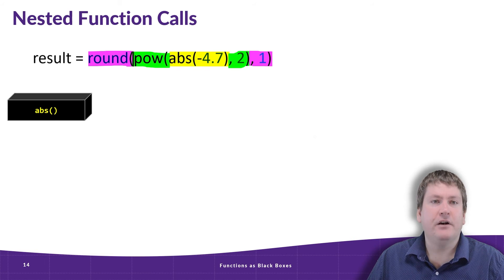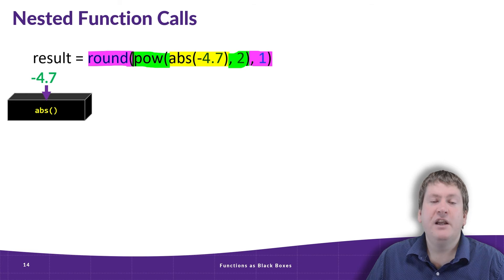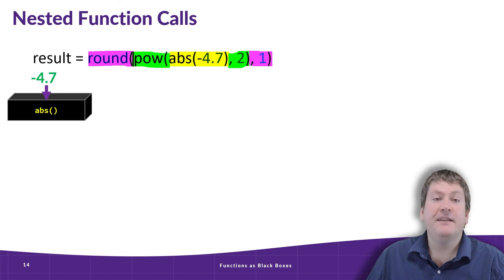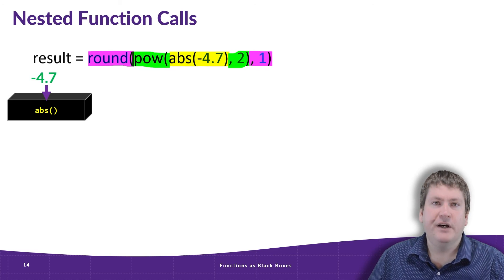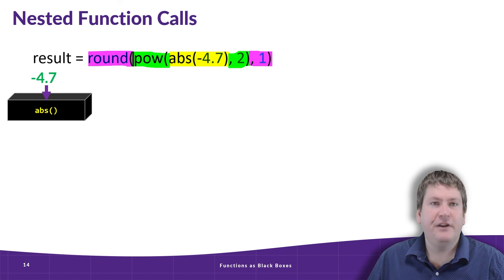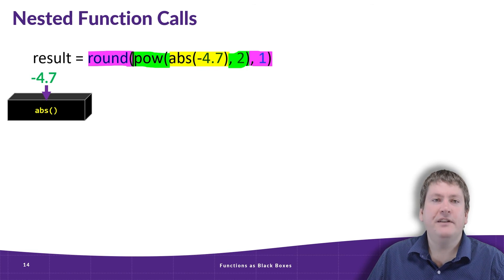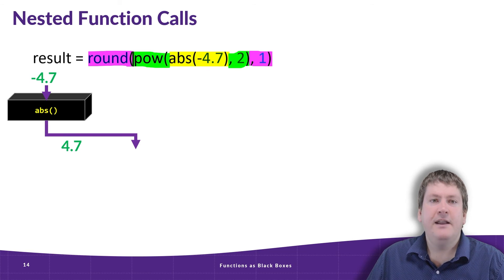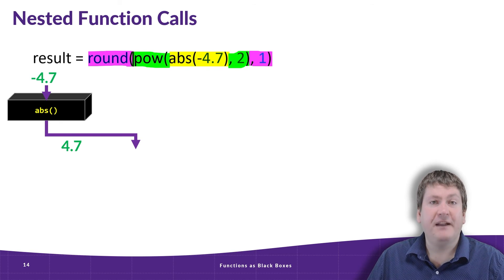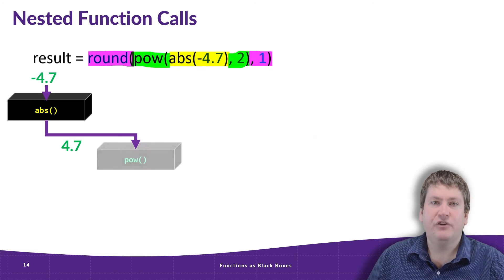So first we have the call to the absolute function. And this is going to be evaluated first, because it's the most nested call. It means that we have to evaluate this before we can evaluate all those other function calls. We don't know what the result of power is going to be until we know what the input into it is going to be. So in this case, the value negative 4.7 goes into the absolute function, and as output, we get 4.7. Because this is nested in that call to power, that means this output is then going to be sent as input to the power function.